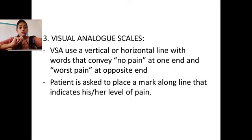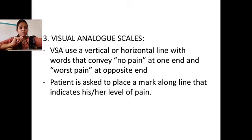The visual analog scale uses a horizontal or vertical line with no pain at one end and worst possible pain at the opposite end. By this we can understand the patient's pain intensity.